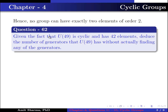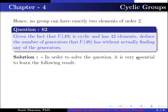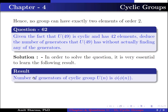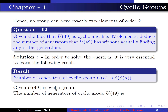Question number 62: Given that U(49) is cyclic and has 42 elements, deduce the number of generators that U(49) has without actually finding any of the generators. The key result is: the number of generators of a cyclic group U(n) is φ(φ(n)), where φ is the Euler phi function. Since U(49) is cyclic, the number of generators is φ(φ(49)) = φ(42) = 12.